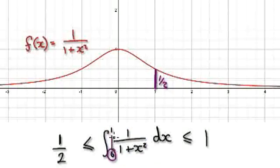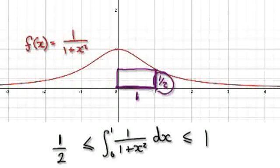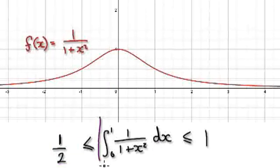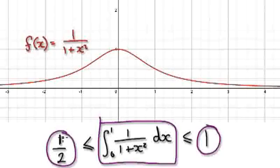Because you are evaluating in this interval, which is one, the smallest area here would be a half times one. So we've trapped this area here, and this area is between a half and one.